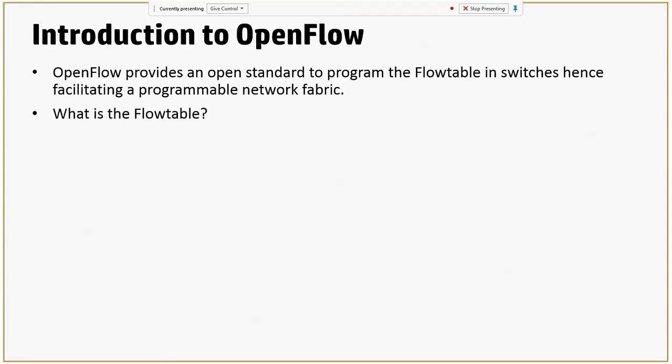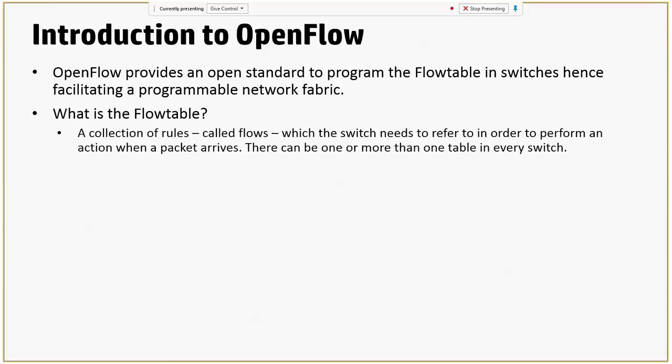What is a flow table? When a packet comes in to a switch, the switch needs to decide what to do with the packet. There are two routes it can take: it can either look up something called a flow table, which is basically a collection of rules, and decide what to do; or it can do what it has always been doing — normal Ethernet processing. The flow table is a collection of rules called flows, needed by the switch to refer to whenever a packet comes in. There can be one or many tables in every switch, and each of these tables contains a list of rules.